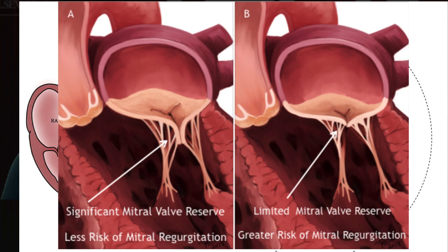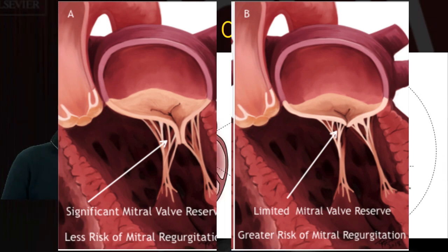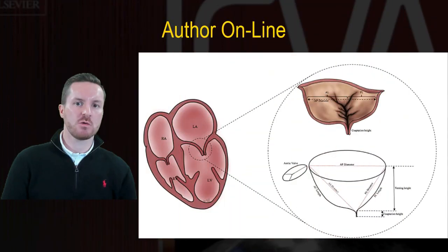Whereas patients with reduced apposition between the leaflets, or a reduced coaptation zone, are unable to sustain these geometric changes, and subsequently go on to develop ischemic mitral regurgitation.